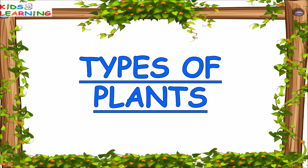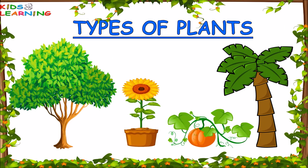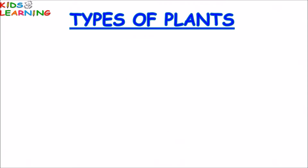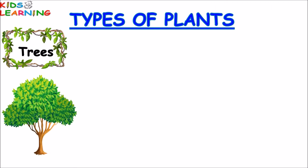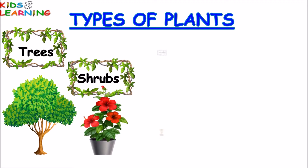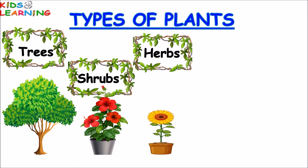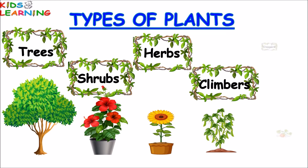Types of Plants. We can see different types of plants around us. All plants are of different sizes and forms. Some are tall and huge while some others are small, delicate and lie on the ground. Basically, plants are of five types. They are trees, shrubs, herbs, climbers and creepers.